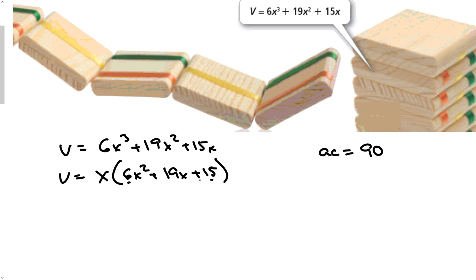So I want to find the factors of 90 that add to 19. Factors of 90. 1 and 90 that's 91. No good. 2 and 45 that's 47. No good. 3 and 30 that's 33. No good. 6 and 15 is 21. No good. But closer. 9 times 10 is 19. And there we go.